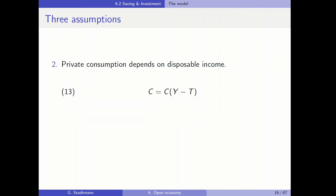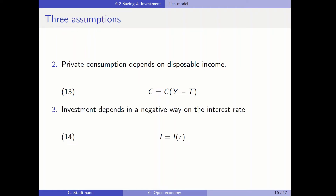Private consumption depends on disposable income — we have this consumption function with disposable income Y minus T in brackets. We also assume that investment depends negatively on the interest rate, so investment is a function of the real interest rate r, and when r increases, investment decreases.